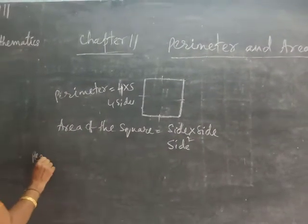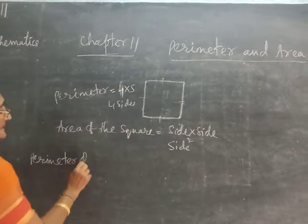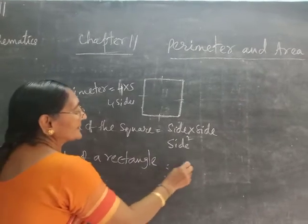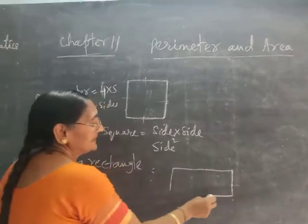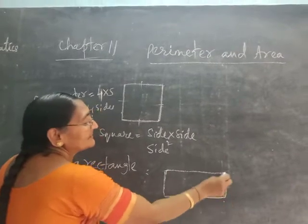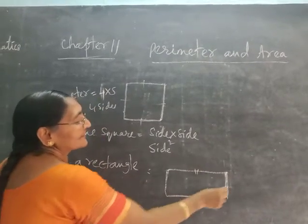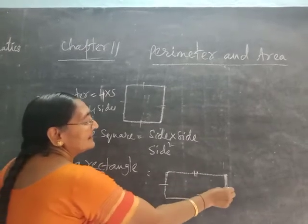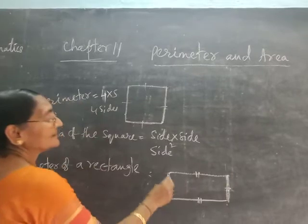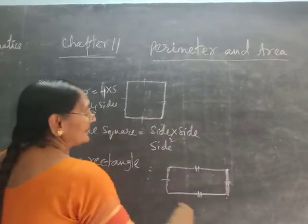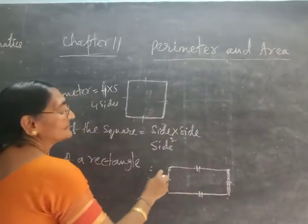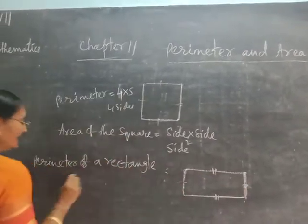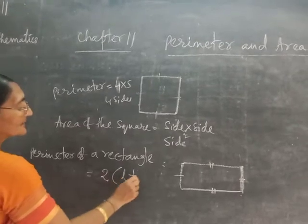Now, perimeter of the rectangle. What is the property of a rectangle? This is the length and this is the breadth — opposite sides are equal. The lengths are the same and the breadths are the same. So, how many lengths are there? Two lengths and two breadths. Therefore, the perimeter of the rectangle is equal to 2 × (L + B).